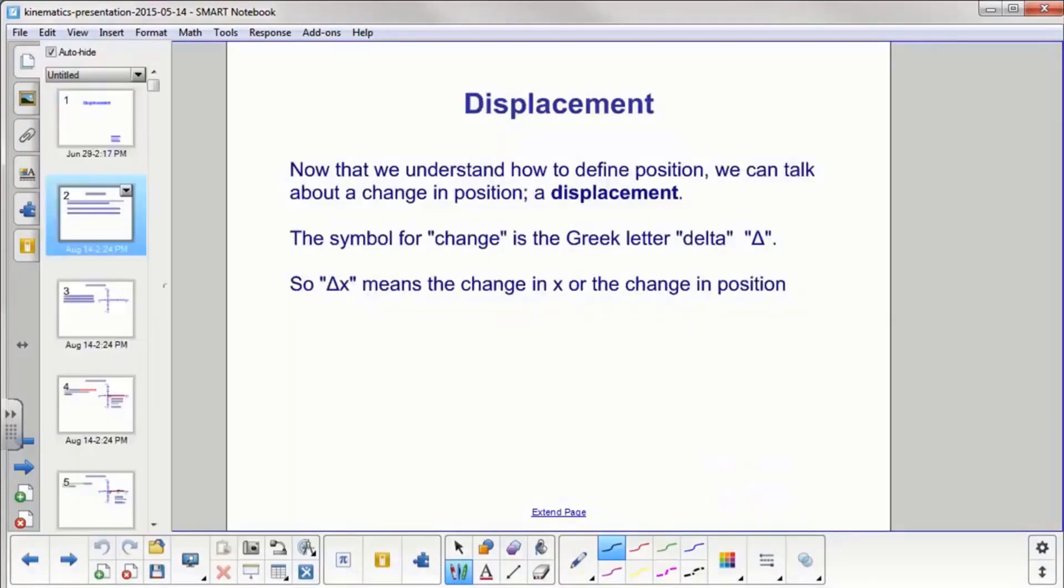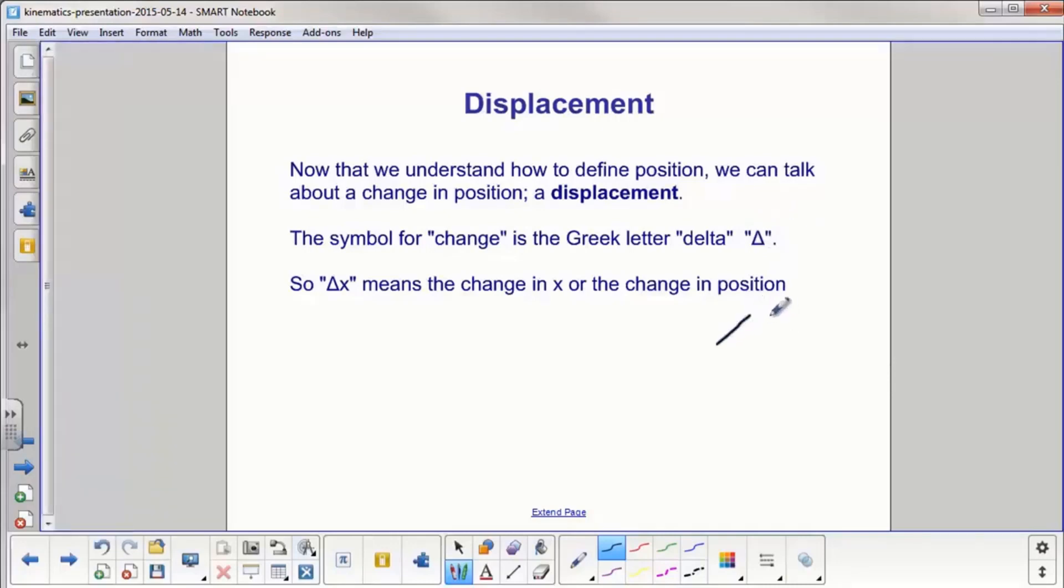We know how to define position. We have the reference frames. We mark off our position with reference to the reference frame, so we can say something is two meters east of a point, three meters south. We're now going to talk about a change in position. The symbol for change is the Greek letter delta. So that looks like this, just looks like a triangle. That means delta. So delta X means the change in X or the change in position.